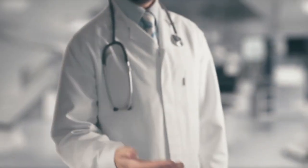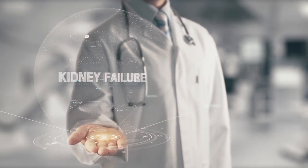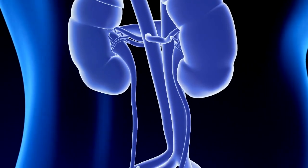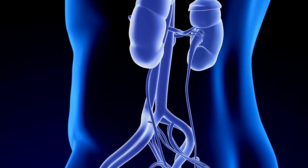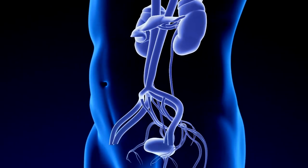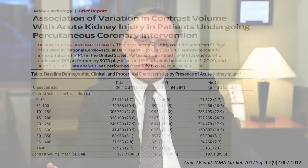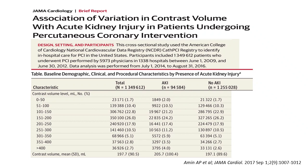The more contrast we give, the more kidney failure happens. There is a very simple relationship, and contrast reduction is one of the most effective ways we know of protecting the kidneys. In the national database of cardiac catheterization with over three million procedures, published two years ago, we find quite high contrast volumes per patient. Only 1.7% of patients had less than 50 milliliters of contrast per procedure, while 2.7% of patients received over 400 milliliters of contrast.